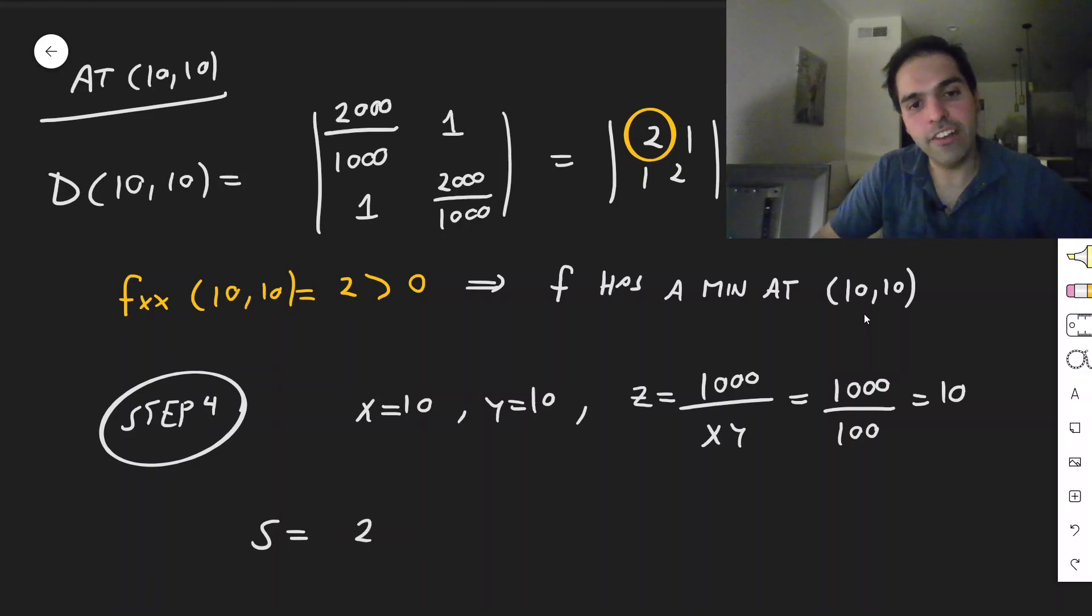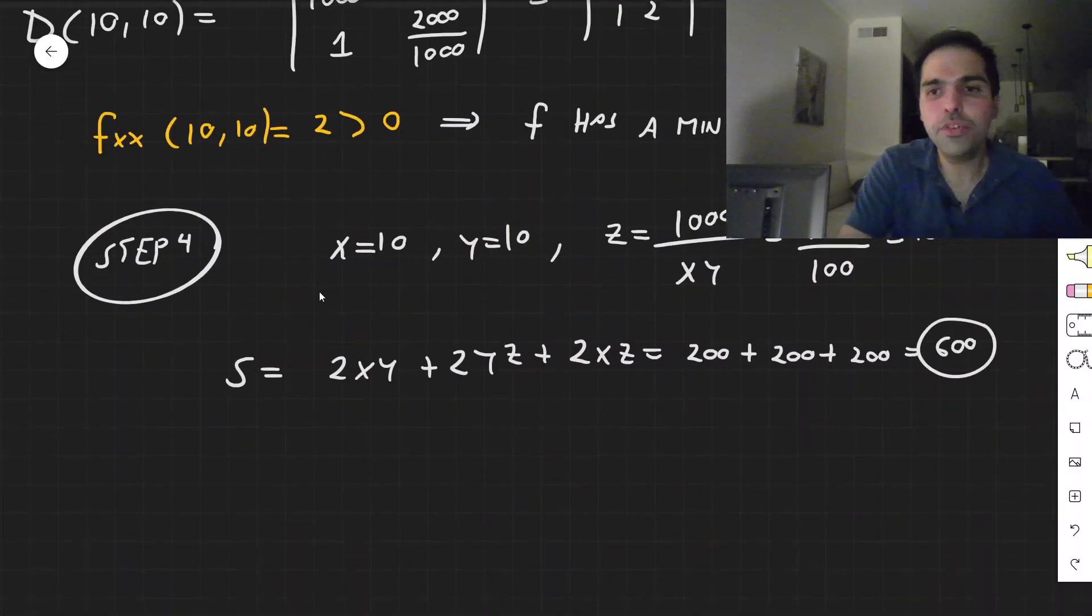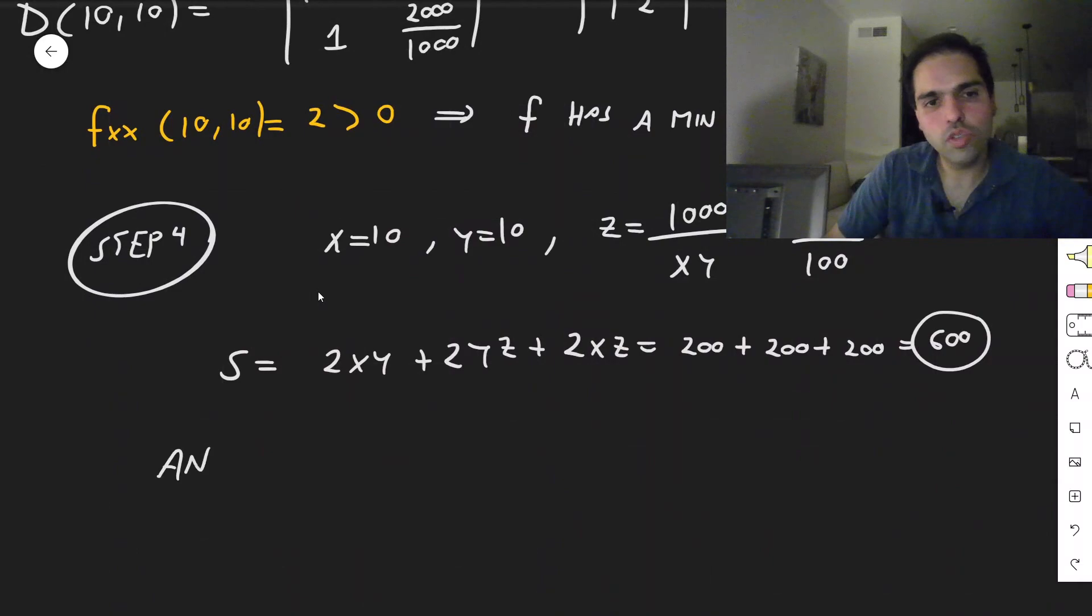And then the surface area is 2xy plus 2yz plus 2xz, which now becomes 200 plus 200 plus 200, and that's 600. So the smallest surface area you can find is 600 square centimeters.